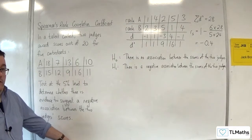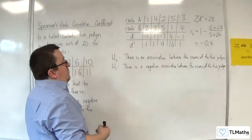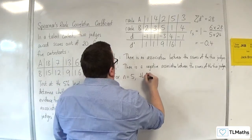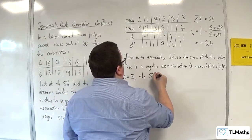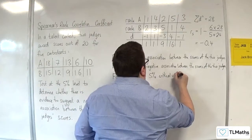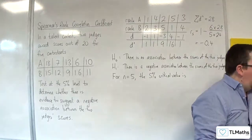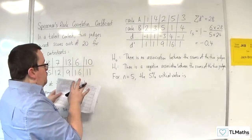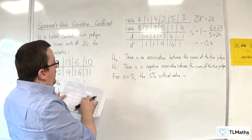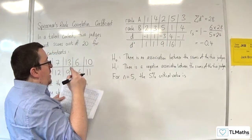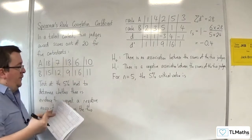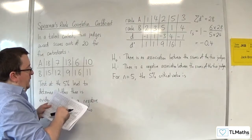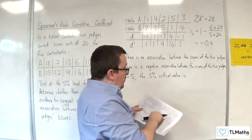Right, the next thing is we need to find our critical value. So, for n is equal to 5, we're testing at 5%. The 5% critical value is, so this is when we go to our tables. So, in the formula booklet, on page 12, you're looking at the right-hand side. Okay, so the right-hand side for Spearman's. So, we're doing a one-tail test, because we're looking at a negative association. So, one-tail, 5%, and then we go down to n is 5.